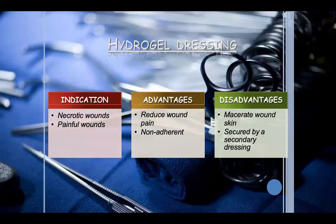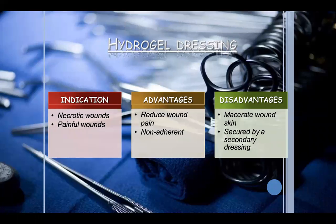Hydrogel dressings are indicated for necrotic wounds, dirty wounds, and painful wounds. Advantages include reduced wound pain and being non-adherent — they are placed over the area but do not stick. Disadvantage: they can macerate the wound skin. They must be secured by a secondary dressing when this hydrogel dressing is applied. Types available include amorphous hydrogels, impregnated hydrogels, and sheet hydrogels.